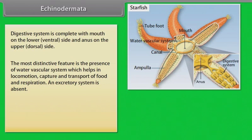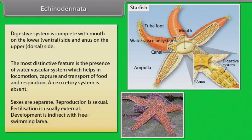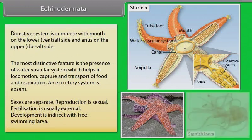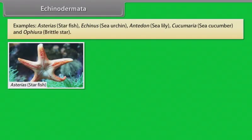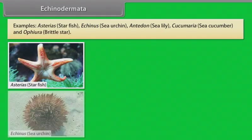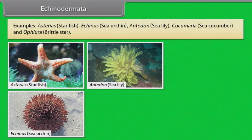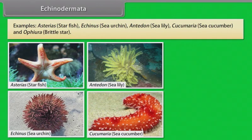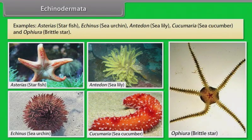An excretory system is absent. Sexes are separate; reproduction is sexual. Fertilization is usually external. Development is indirect with free-swimming larvae. Examples: Asterias (starfish), Echinus (sea urchin), Antedon (sea lily), Cucumaria (sea cucumber), Ophiura (brittle star).